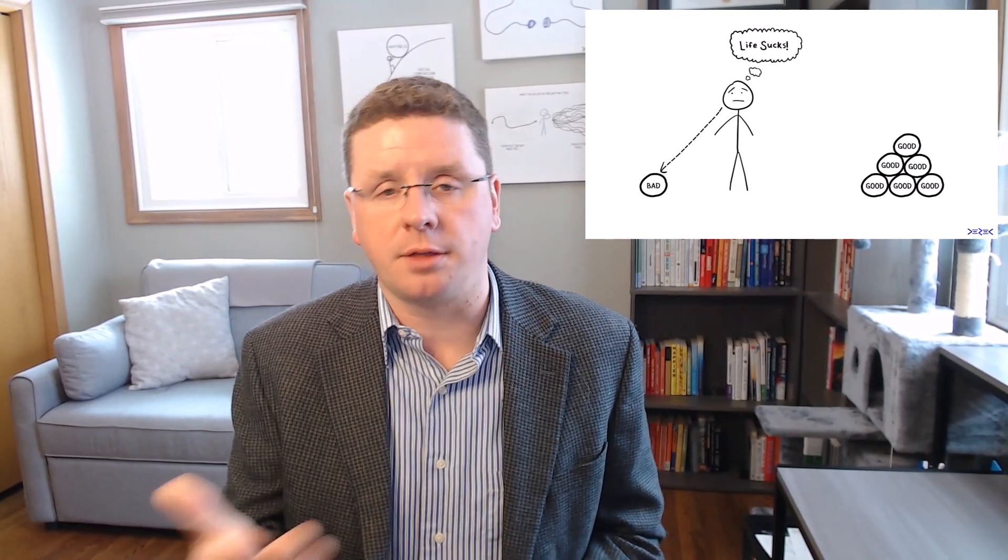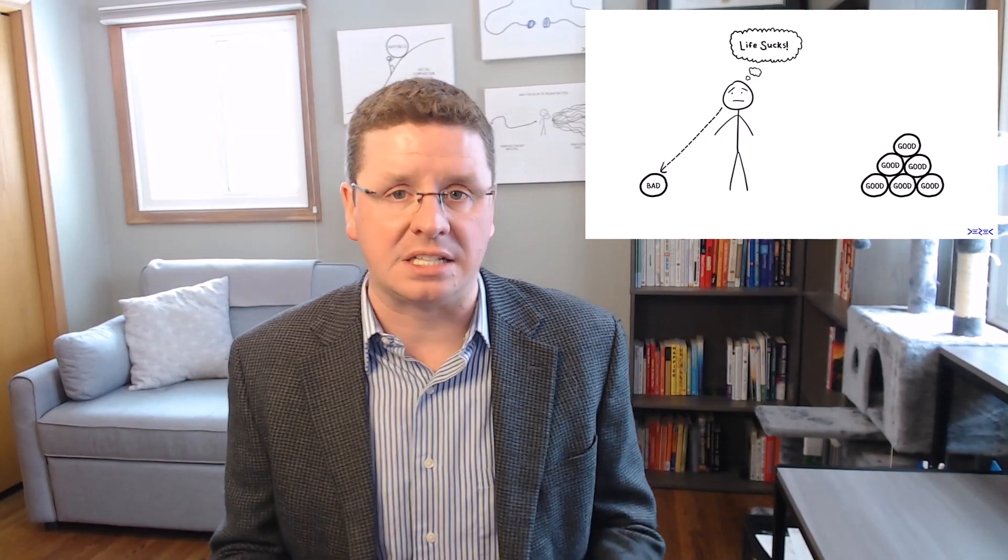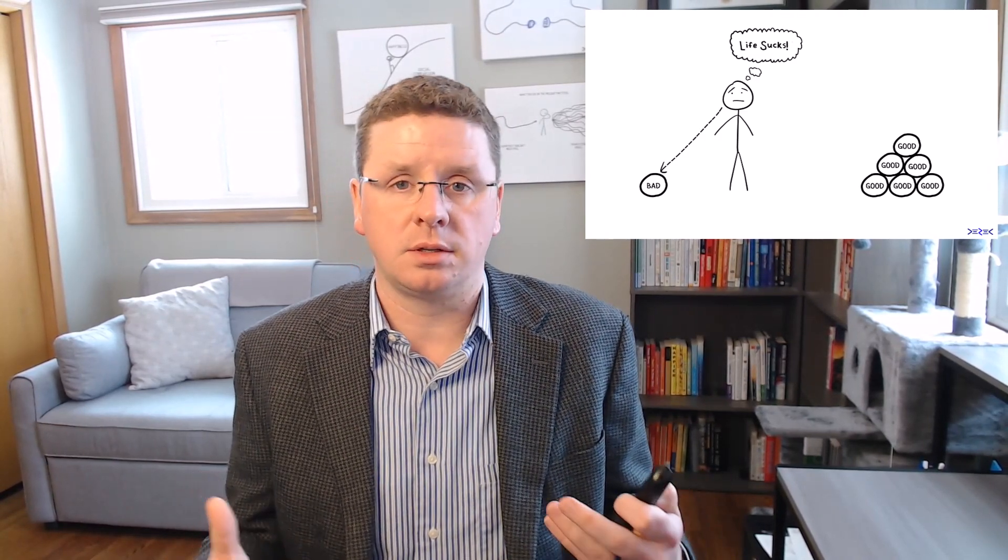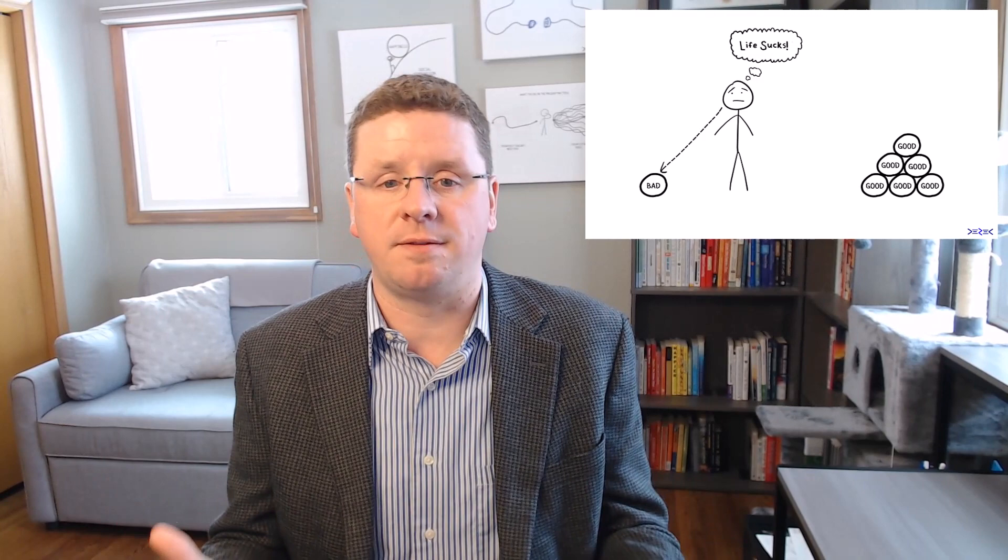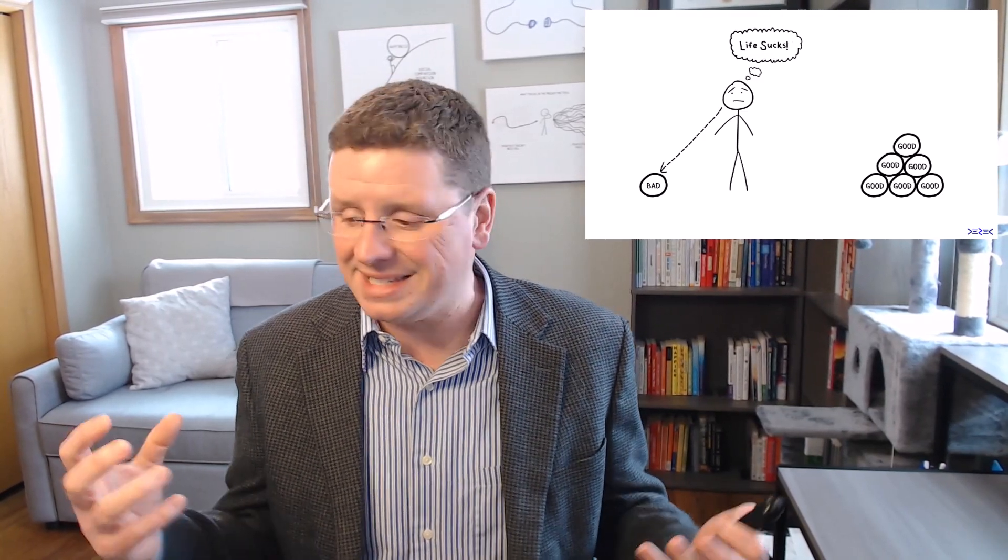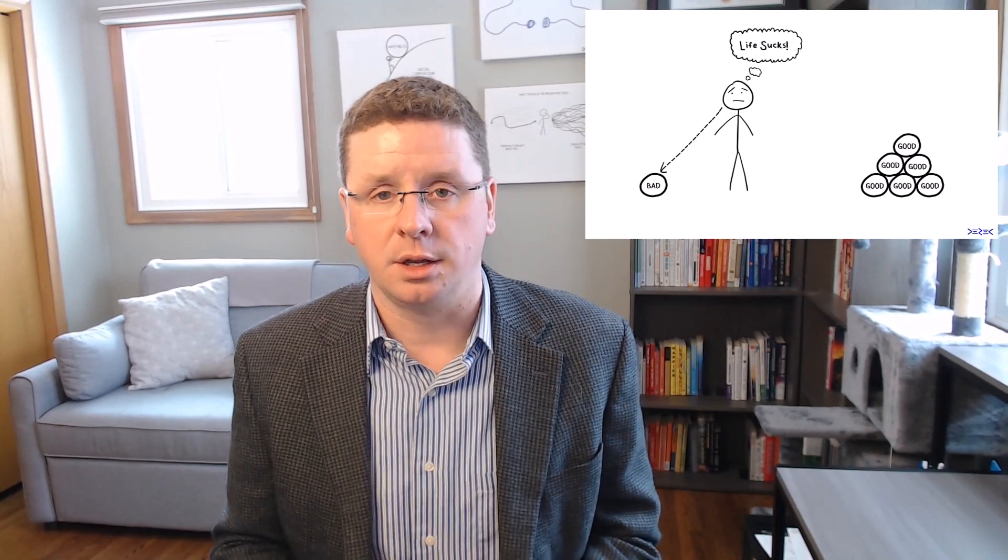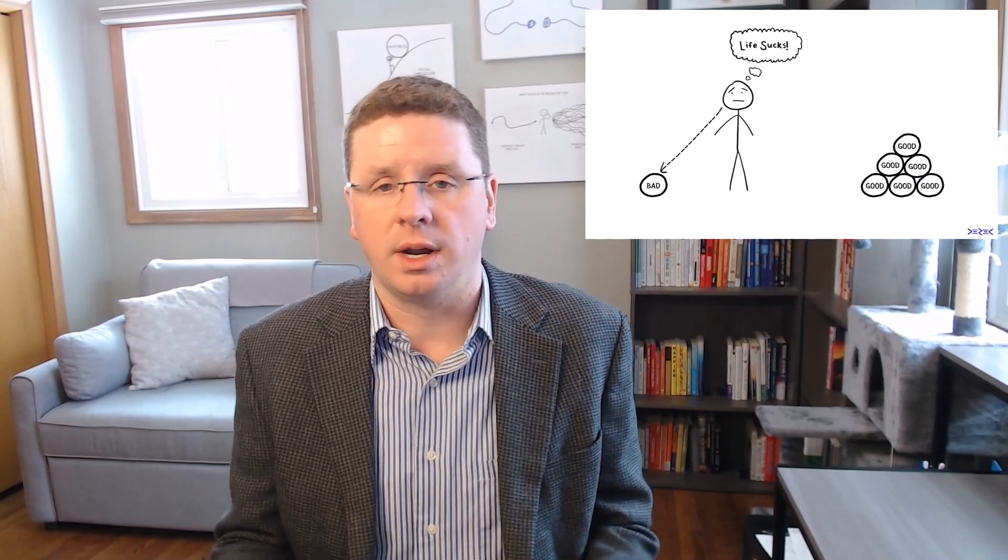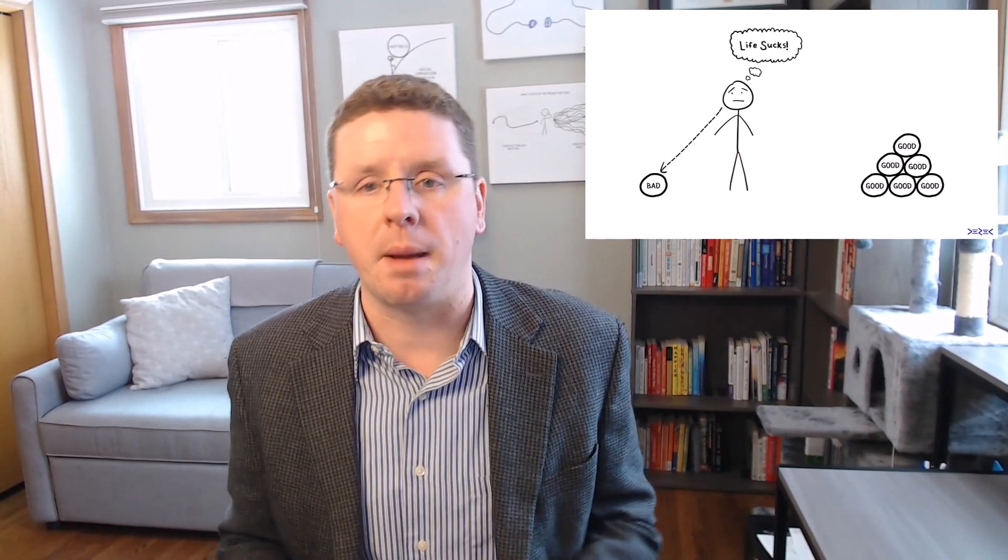This is the negativity bias. Author Rick Hansen talks about the negativity bias being similar to this: your brain is like Velcro for negative experiences. This one bad piece of information sticks to your brain. You're going to spot it more, notice it more, it's going to stick around longer, you're going to remember it more.